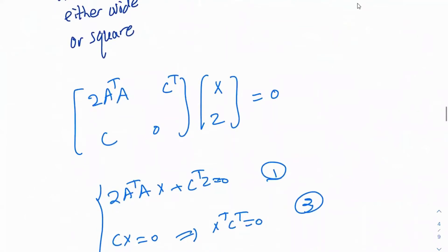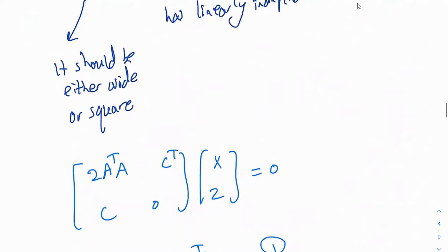Let's go ahead and see how we can look at this in a more intuitive way. Remember, any time you want to show that a matrix has linearly independent columns or is invertible, we have this equation Ax equal to b. We want to say that this equation has a unique answer, or prove that A has linearly independent columns. What we do is write Ax equal to 0 and show that x equal to 0 is the only solution.